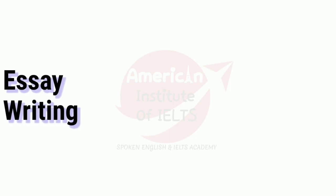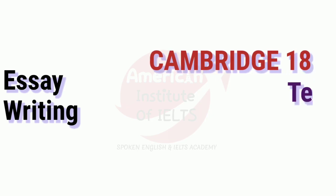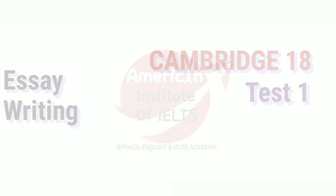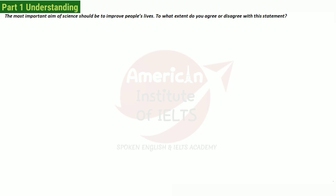Hi guys, warm welcome to this special tutorial on essay writing. Here I am going to write an essay from Cambridge 18 Test 1. The essay topic says: 'The most important aim of science should be to improve people's lives.' To what extent do you agree or disagree? So this essay is talking about science.